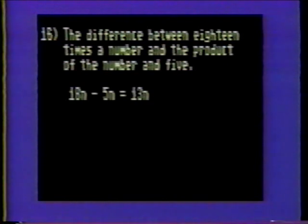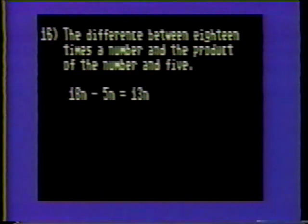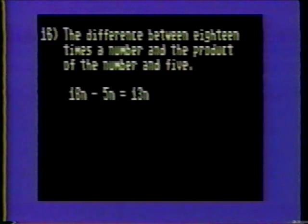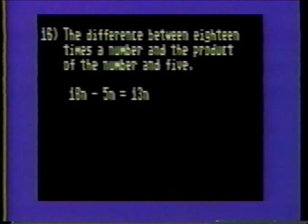Number sixteen: the difference between eighteen times a number and the product of the number and five. Let n represent the unknown number. First, multiply n by eighteen to obtain eighteen n. Next, multiply the unknown number by five, which is five n. To determine the difference, subtract five n from eighteen n. Eighteen n minus five n is thirteen n.